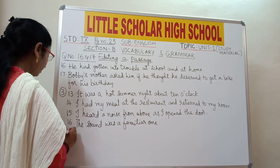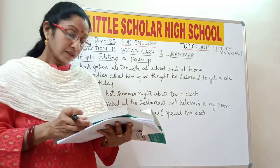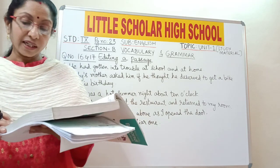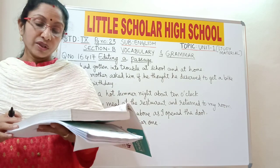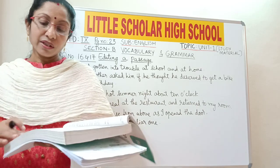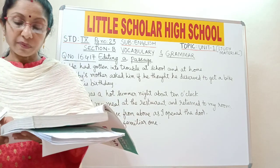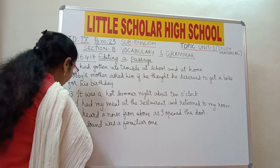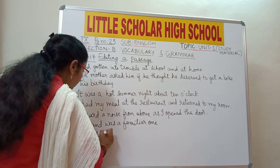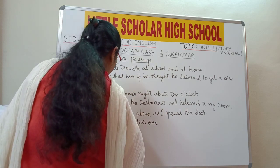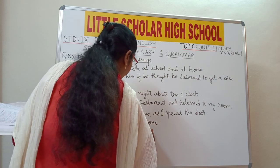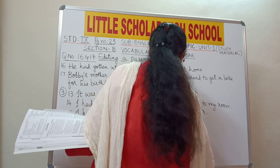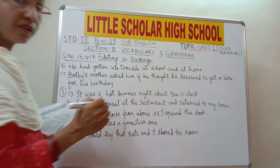Question number 17: 'One could say that rats and I share the room.' Here 'could' is in the past tense, so the verb 'share' also should be in the past tense. Replace 'share' with 'shared' — the past tense of share. Answer: 'One could say that rats and I shared the room.'